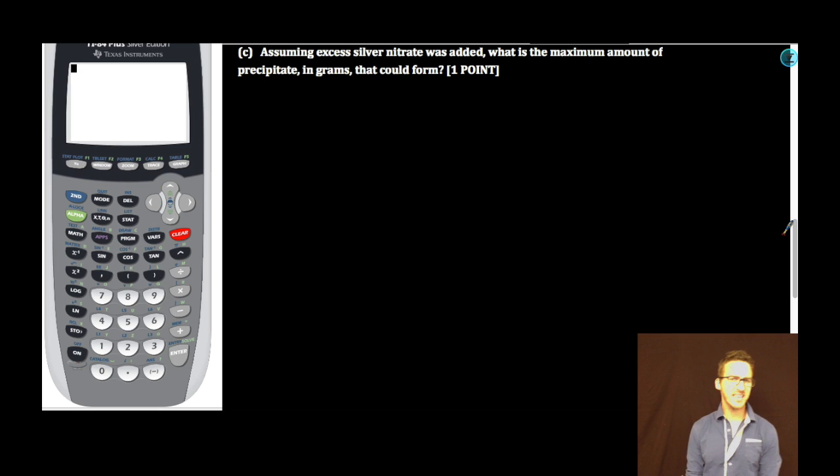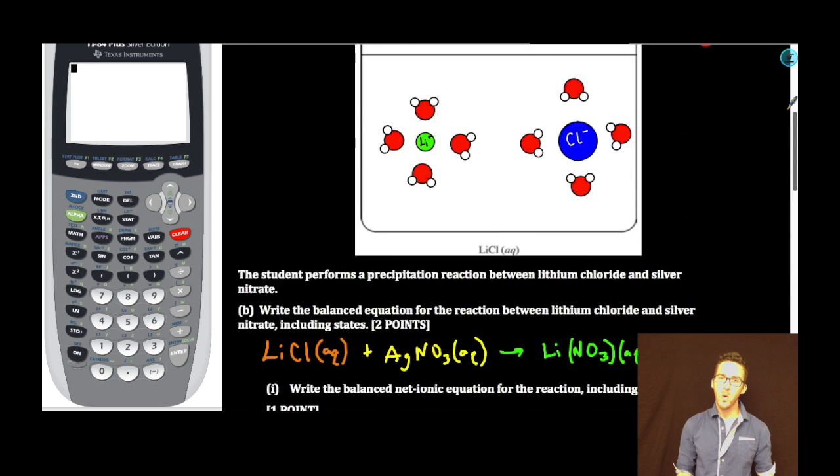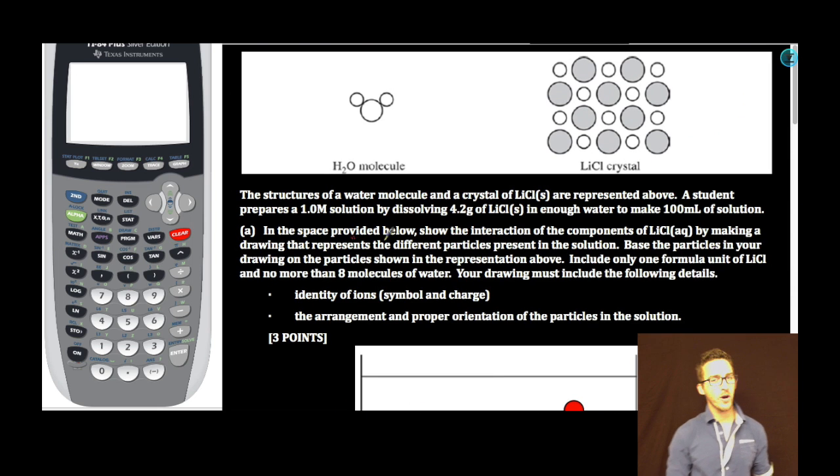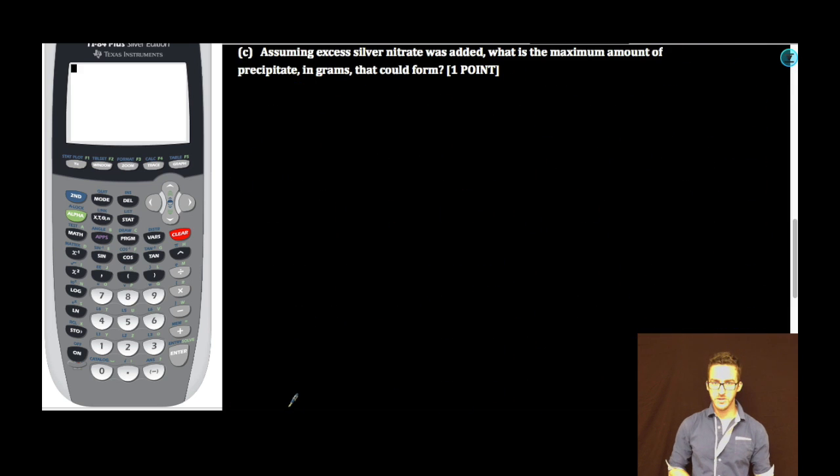Part C. Assume excess silver nitrate was added. What is the maximum amount of precipitate in grams that could form? Okay. Where are my numbers? What am I going to do to start? Again, if you ever get to a point where you're confused, keep in mind, with these free response problems, you often have to go back to earlier parts to help you understand how to answer those parts that are later on in the problem. So let me scroll back up here. Oh, a student prepares a one molar solution by dissolving 4.2 grams of lithium chloride. There we go. So we know that lithium chloride is going to be completely used up, all 4.2 grams of it, because we're told that the silver nitrate is added in excess.